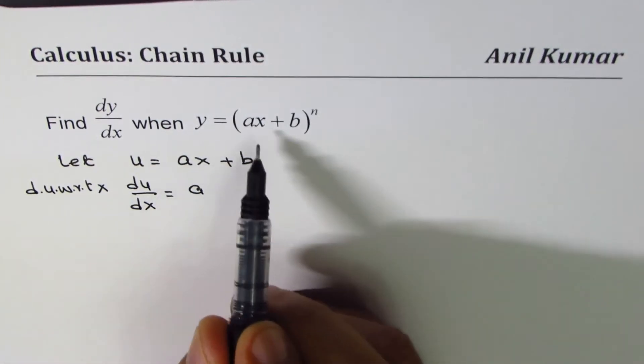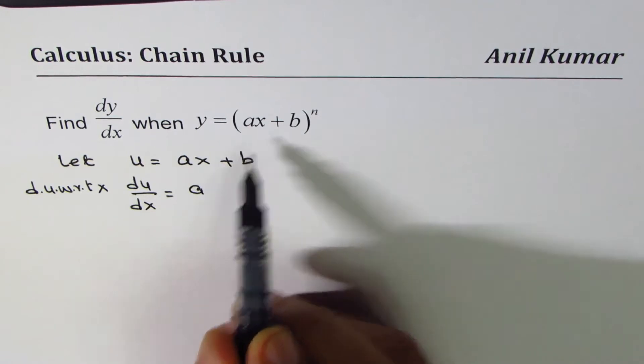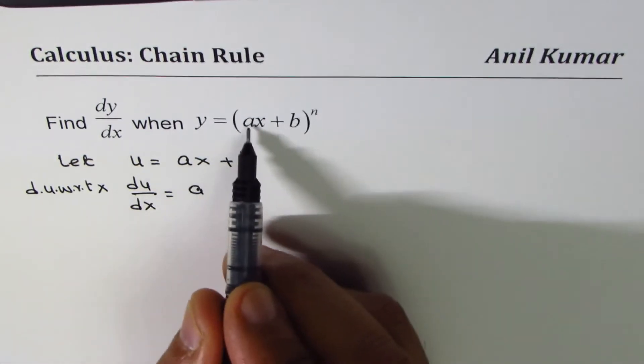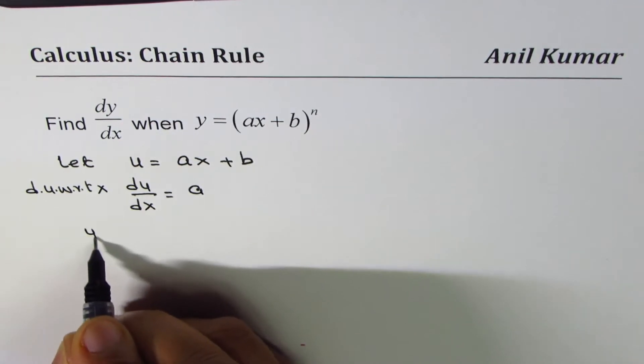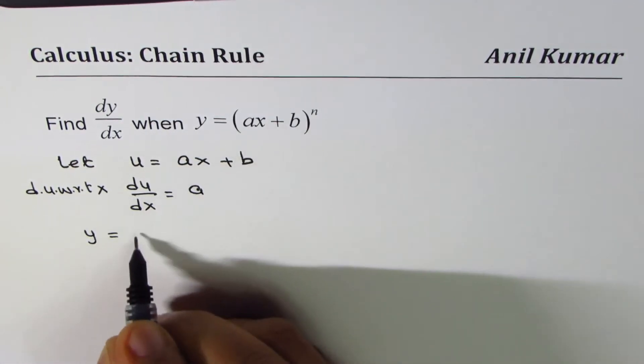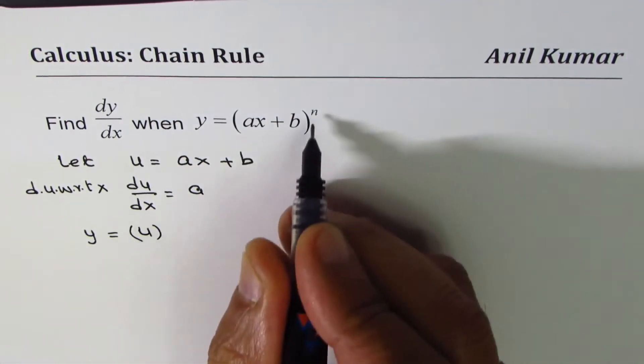So when I substitute inside function as u, if ax plus b is u, I could write y as a function of u. So I could write y as u to the power of n.